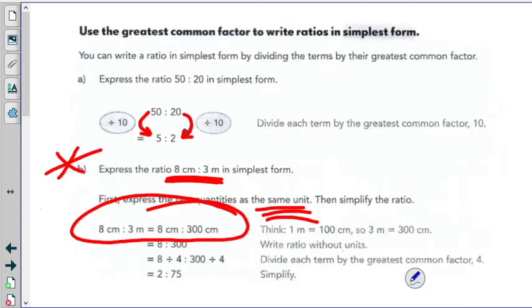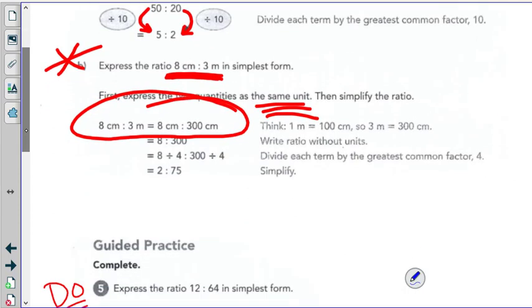The next page, use the greatest common factor to put ratios in simplest form. You already know this. How do I simplify a ratio? So 50 to 20 can both divide by 10 and you get the ratio 5 to 2. The B example, watch out, be careful.